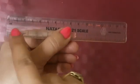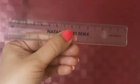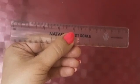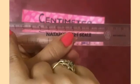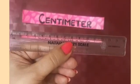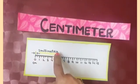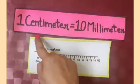This scale has 15 big marks, starting from 0 to 15 cm. The gap between big marks is known as 1 cm, which we write as cm. One centimeter has 10 small marks, and the gap between 2 small marks is known as 1 mm. So we can write: 1 cm is equal to 10 mm.